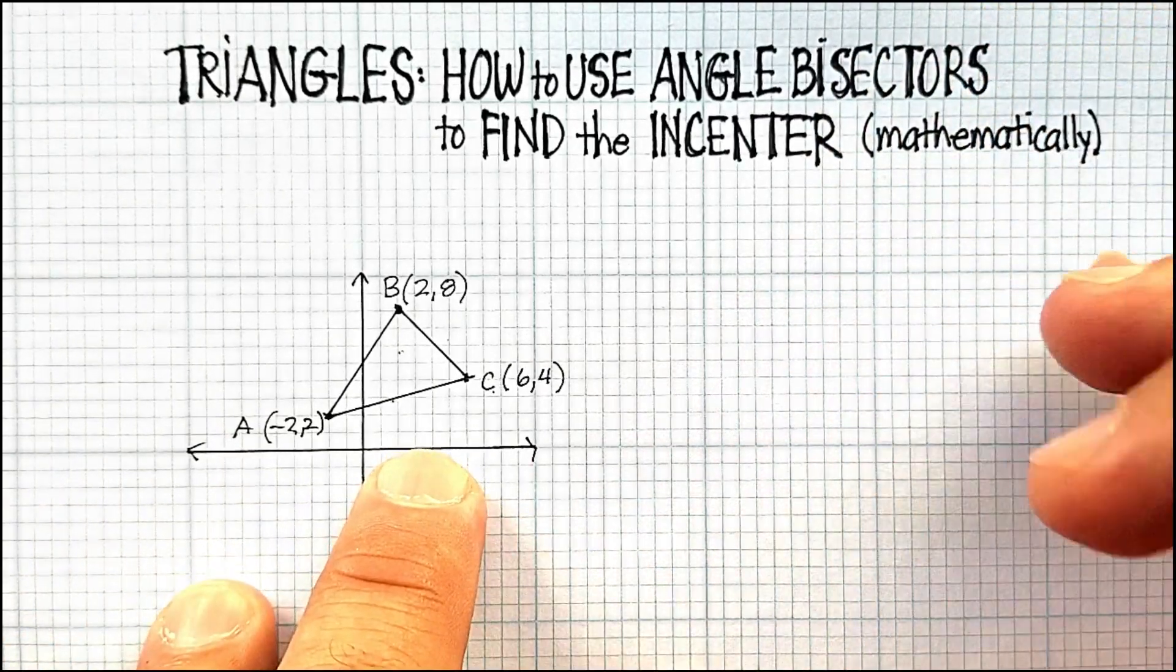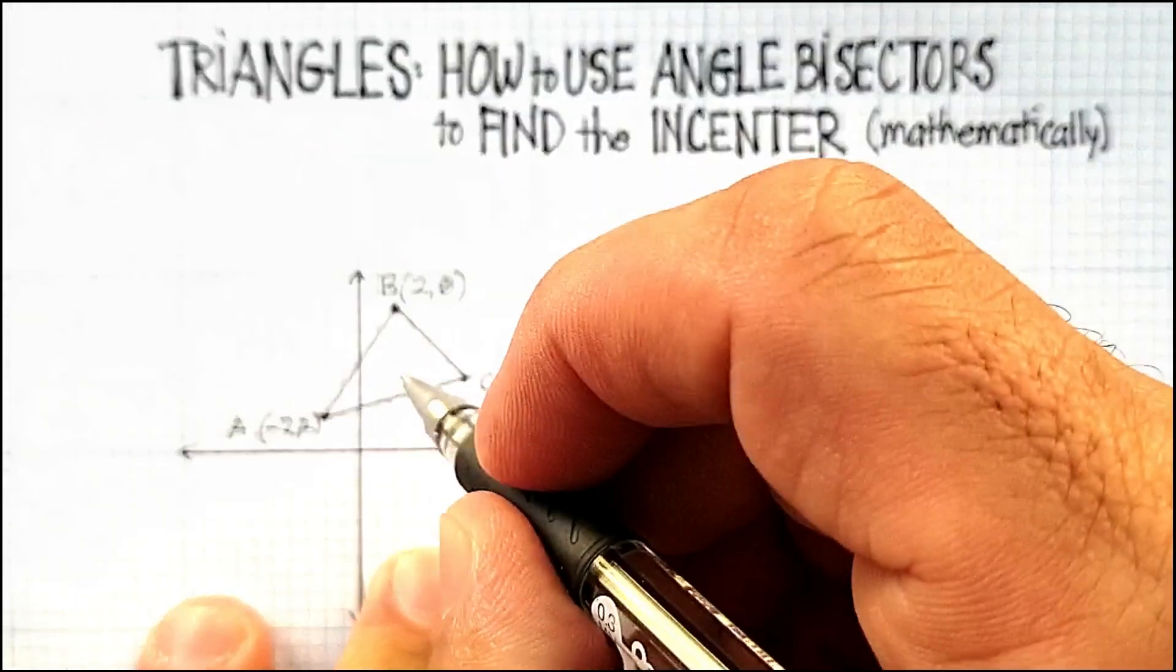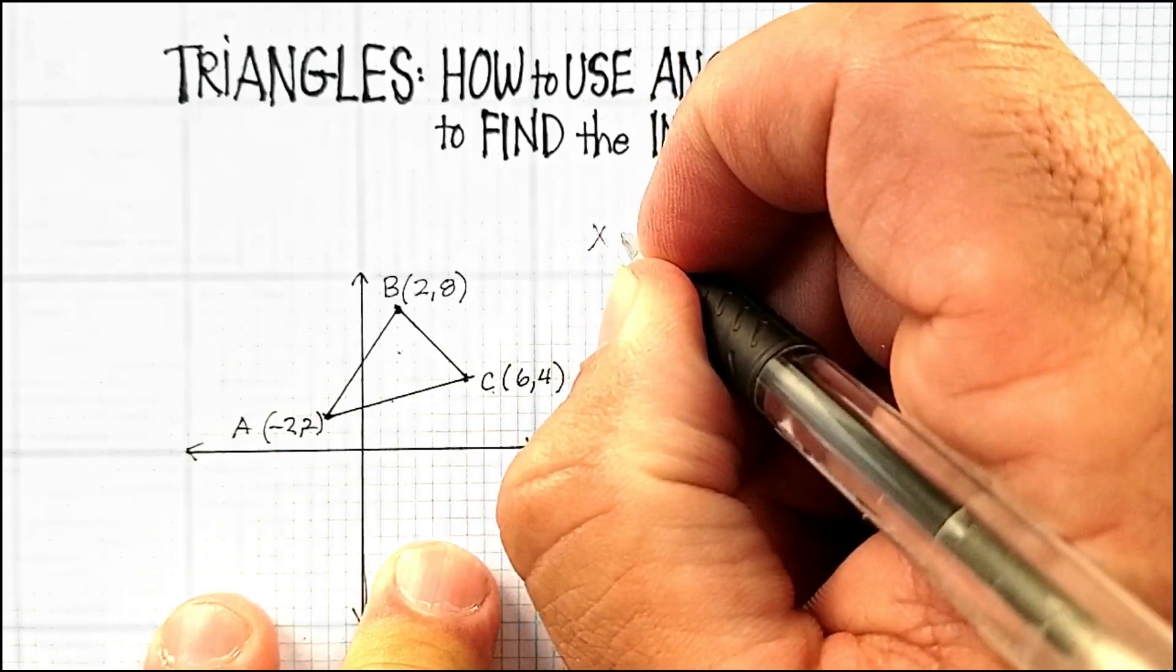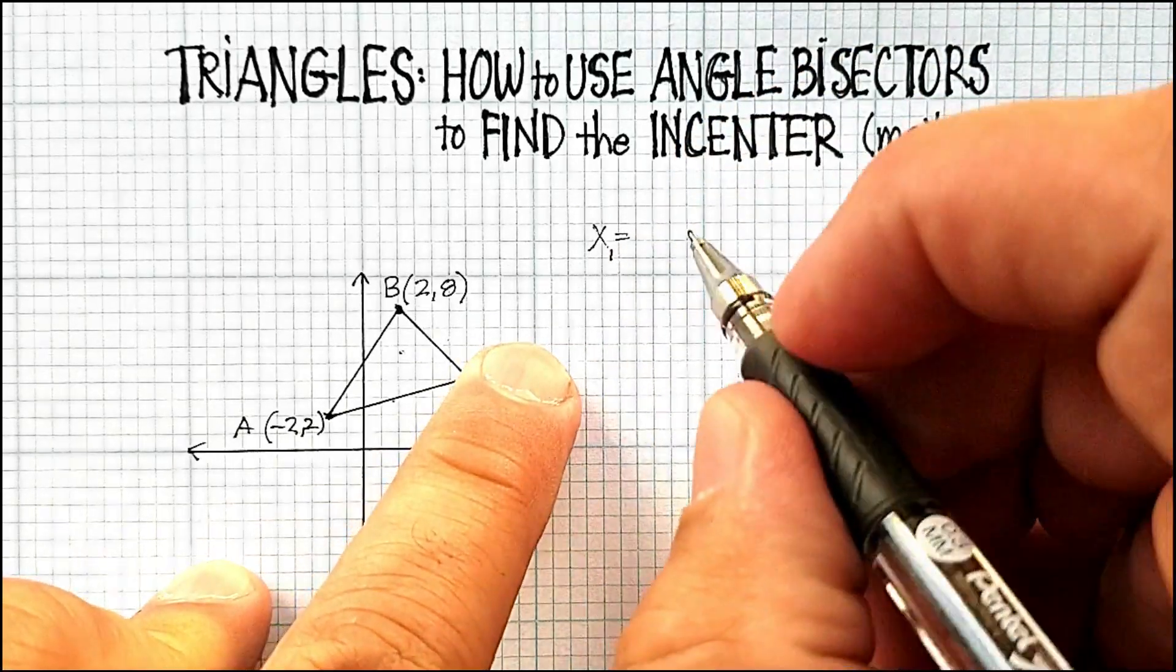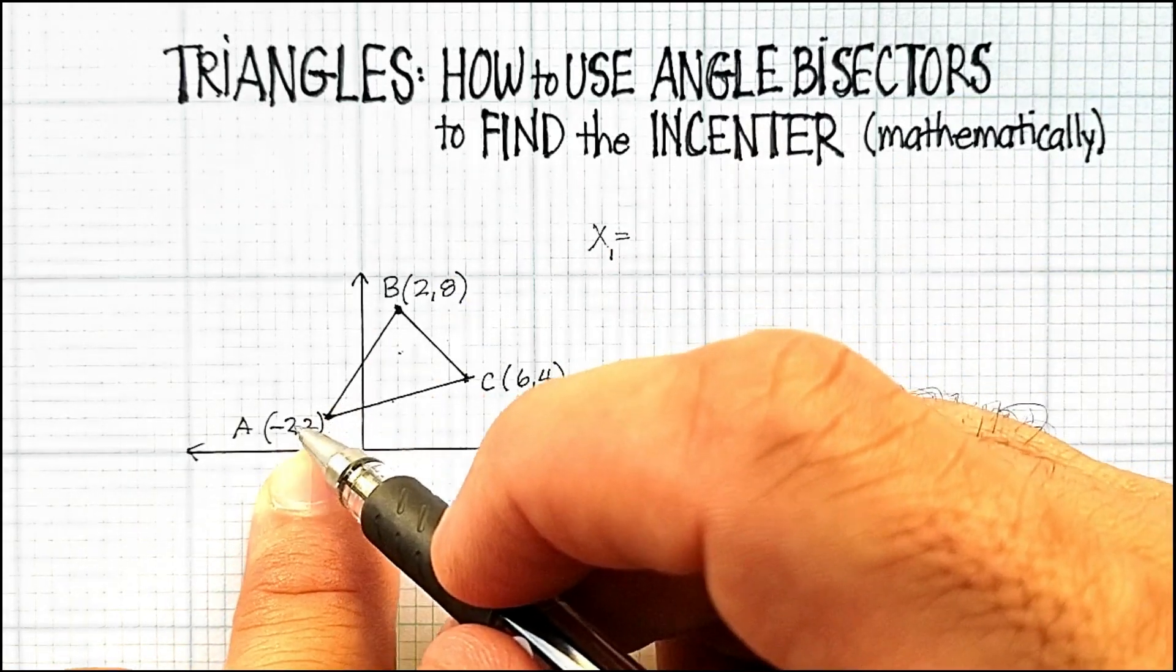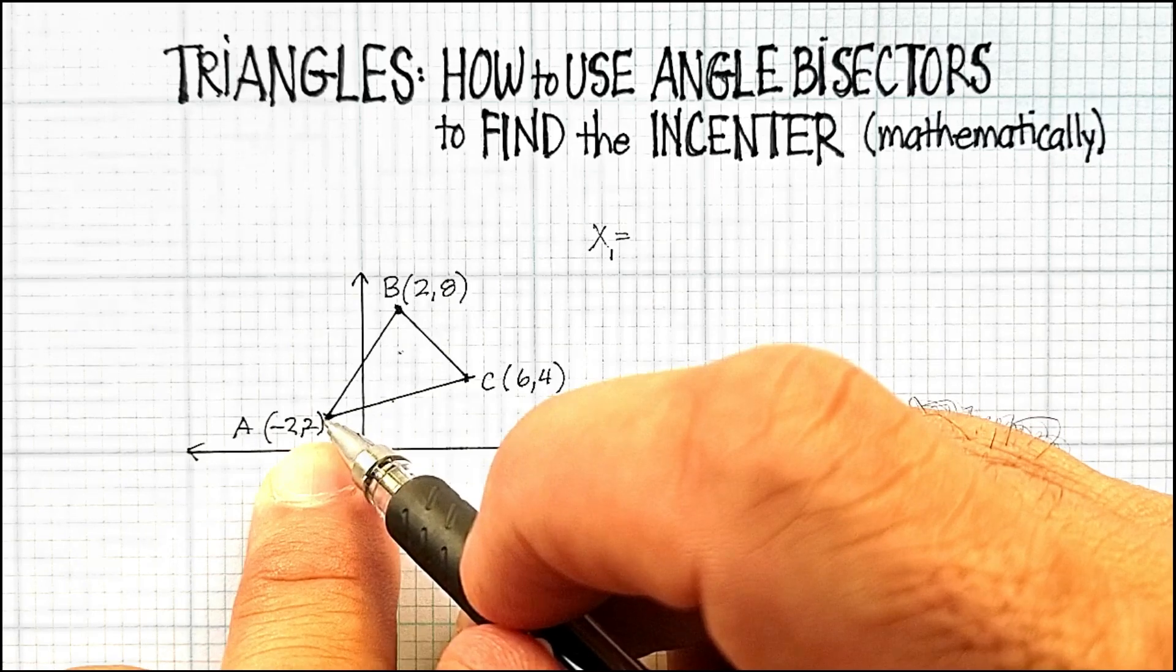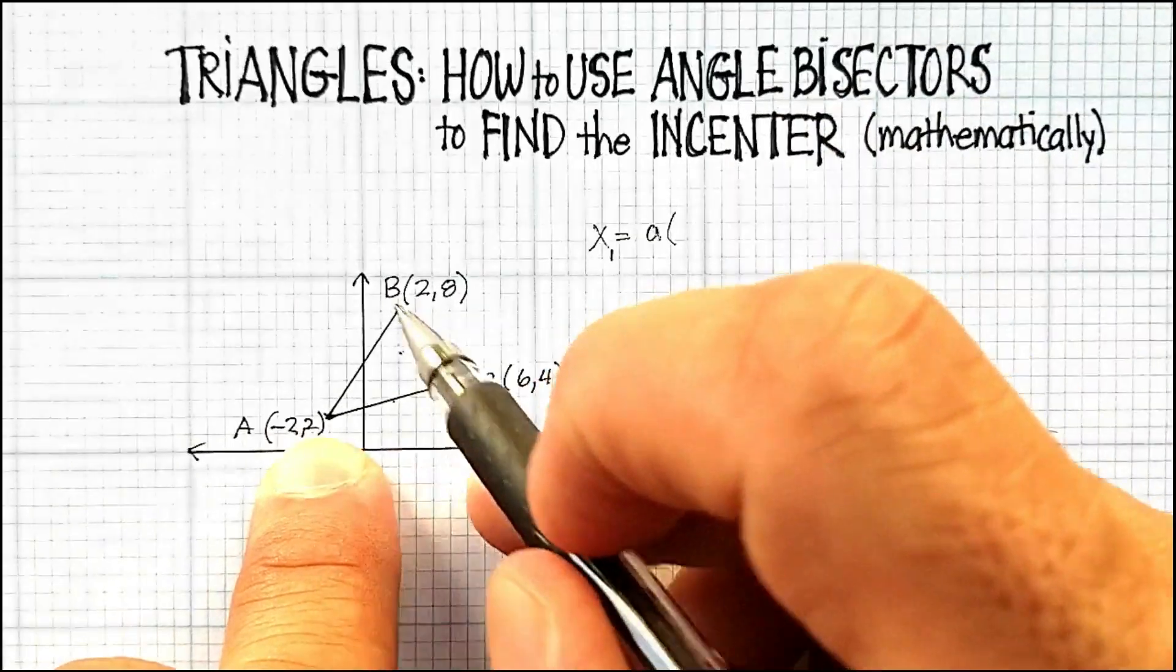Now there is actually a formula for this and let me just go over the formula for it. The formula is x_i, the x coordinate for the incenter, is equal to the x value here, which is negative 2, times the length of the opposite side BC. So I'll just say that is a times the length of BC.